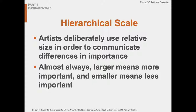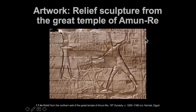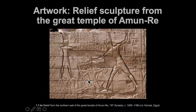Hierarchical scale is a convention used by the Egyptians for thousands of years. The largest figure is the most important person — even if they were shorter in reality, they are depicted as the largest. The pharaoh is the big figure, with smaller figures below representing less important people. Often the important figure is placed higher, on top of the others — which we'll look at next.